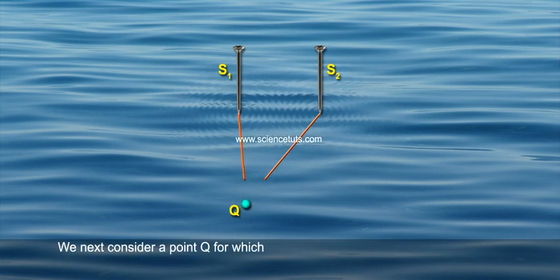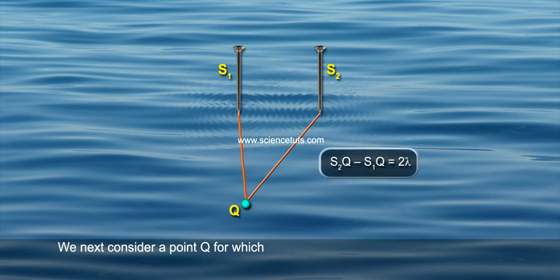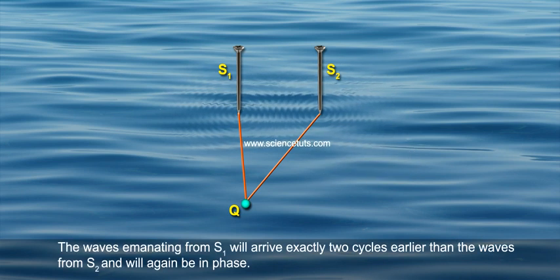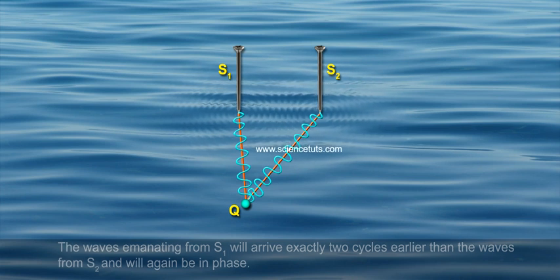We next consider a point Q for which S2Q - S1Q = 2λ. The waves emanating from S1 will arrive exactly two cycles earlier than the waves from S2 and will again be in phase.